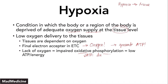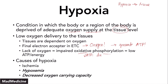When it comes to the causes of hypoxia, there are three main causes you need to know about. One we're going to discuss in this lecture, and the other two we'll cover in part two. The first cause of hypoxia is ischemia. The other cause is hypoxemia, and the last cause is decreased oxygen carrying capacity. Both of those are very high-yield topics, so we're dedicating part two to them.